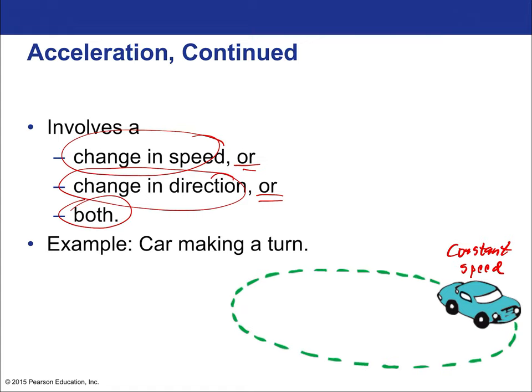Objects will stay in motion unless acted on by an external force. You could also go through a turn and speed up, giving you two forms of acceleration: some acceleration into the turn, and acceleration tangential — in the direction of your motion. Both cases involve acceleration; some cases just have more of it.